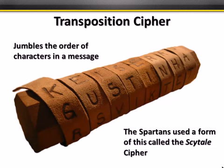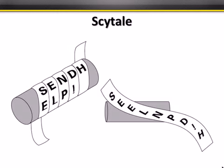Long ago the Spartans came up with the scytale — yes, it rhymes with Italy. It is a cipher where a strip wraps around a dowel. You read across one side, and the number of facets on the dowel determines the cipher. When you pull the strip off, those characters are no longer in readable order — they're jumbled up. That's transposition, that diffusion of spreading characters around, moving them around.